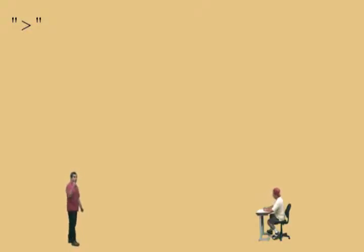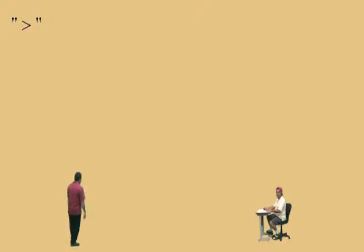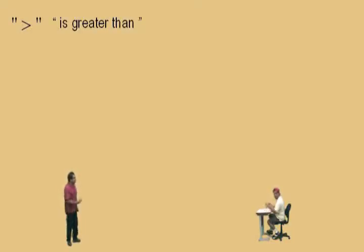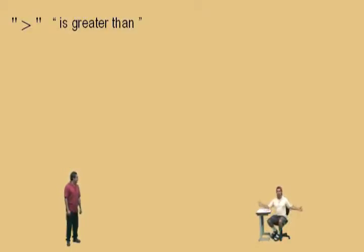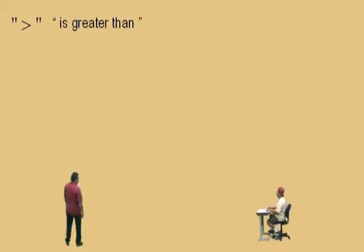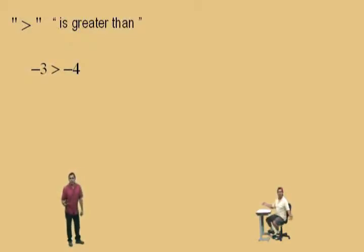That is a symbol. Some people say that symbol is pointing to the right. What does it mean? That symbol represents the word statement 'is greater than.' What does 'is greater than' mean? Charlie, how do you do these problems? The crocodile eats the bigger number. I've heard that the crocodile eats the bigger number — there's no animals in mathematics. Well, at least I don't think so. But anyway, since you seem to know how to do these, try this one right here. Is this true or false?